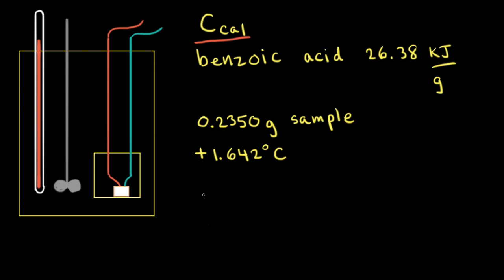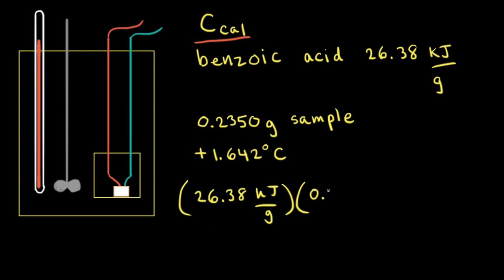To find the heat capacity for the calorimeter, first we take our known amount — 26.38 kilojoules per gram — and we multiply that by how much benzoic acid we used in our calorimeter, which was 0.2350 grams. The grams cancel out, and this is equal to 6.199 kilojoules.